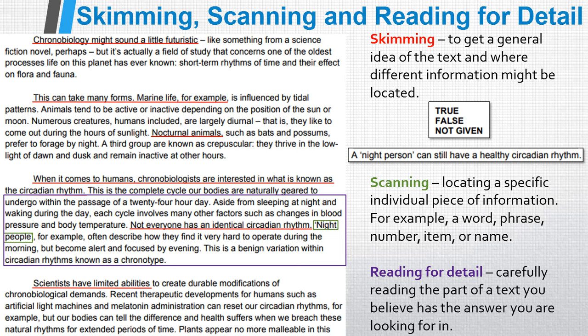You basically repeat that process for the next statements, and you do similar things for different question types. But that is essentially what skimming, scanning and reading for detail is. By doing that, you don't have to read the whole text — you can dip in and out of it and find the relevant parts you need, which is much more time efficient, and that is really important in the IELTS test.